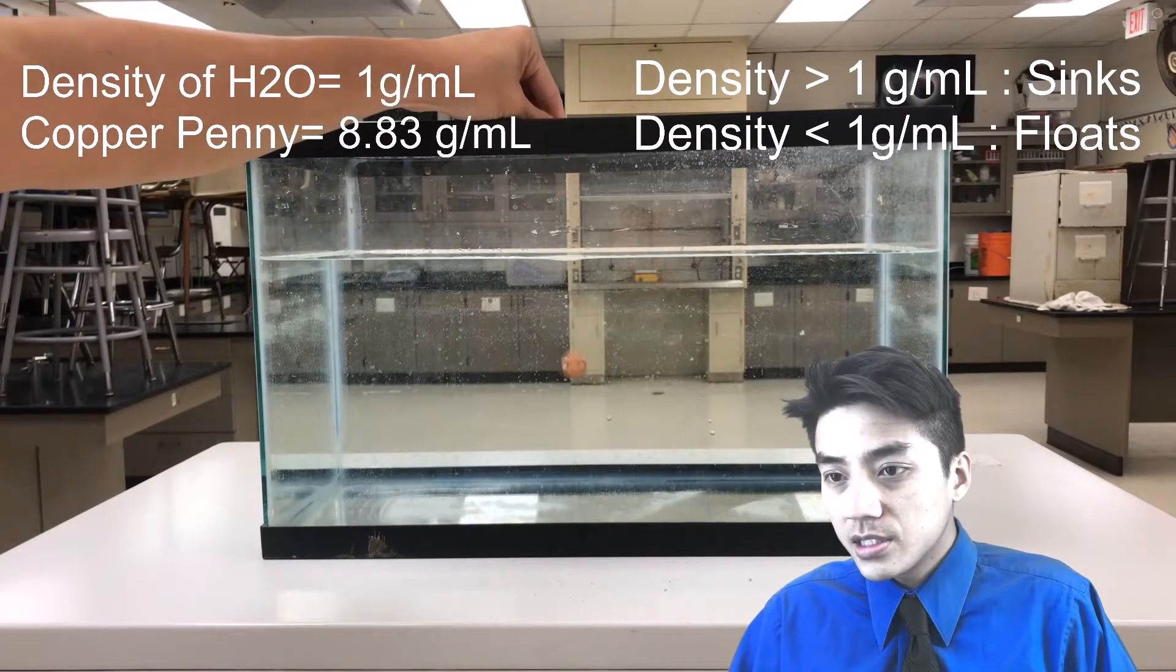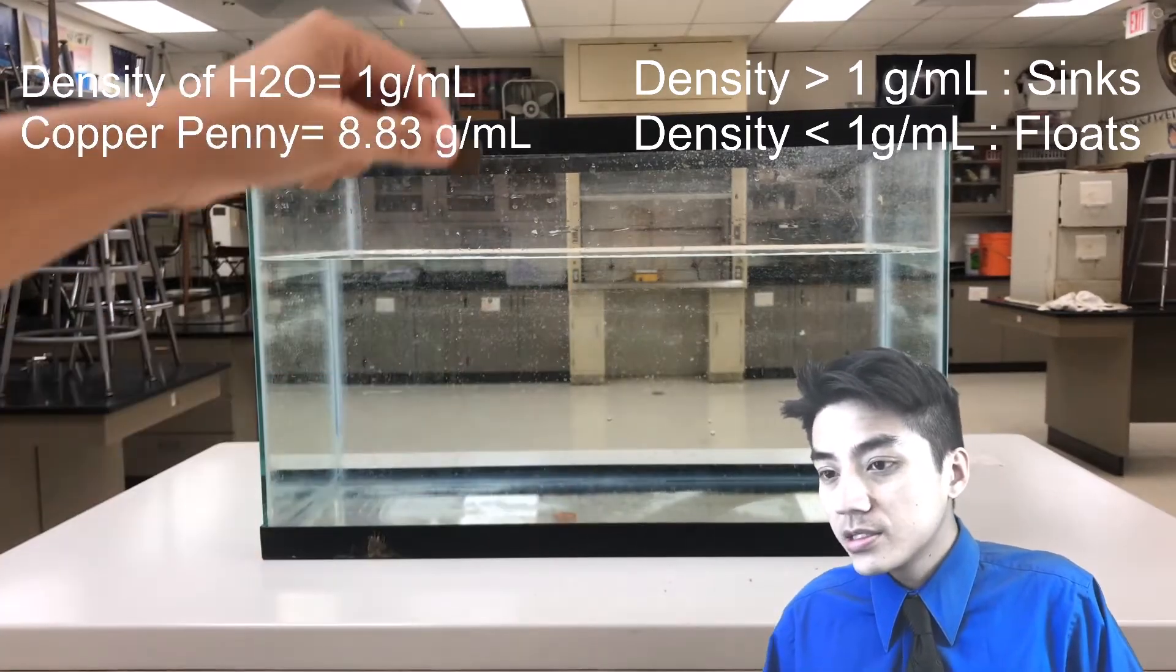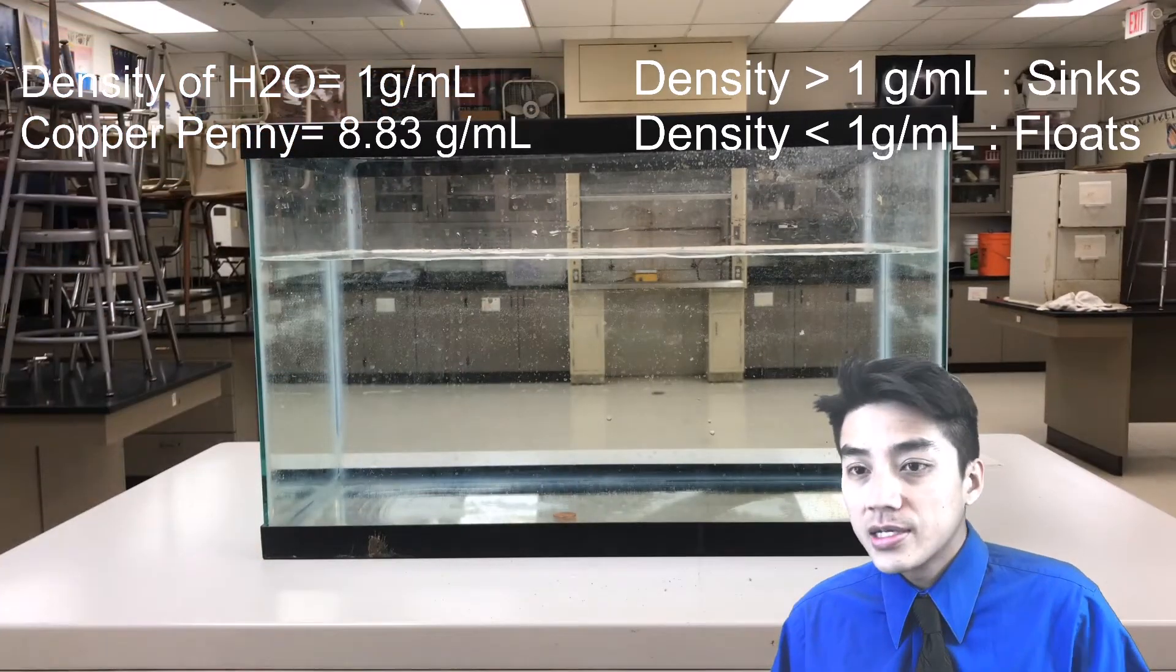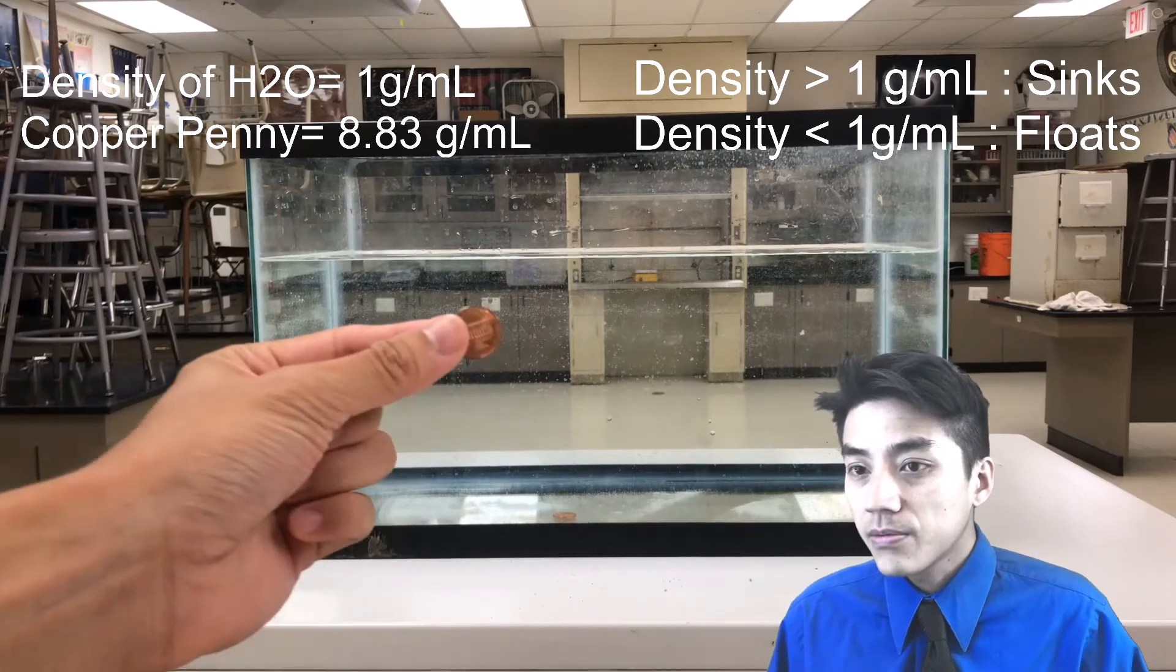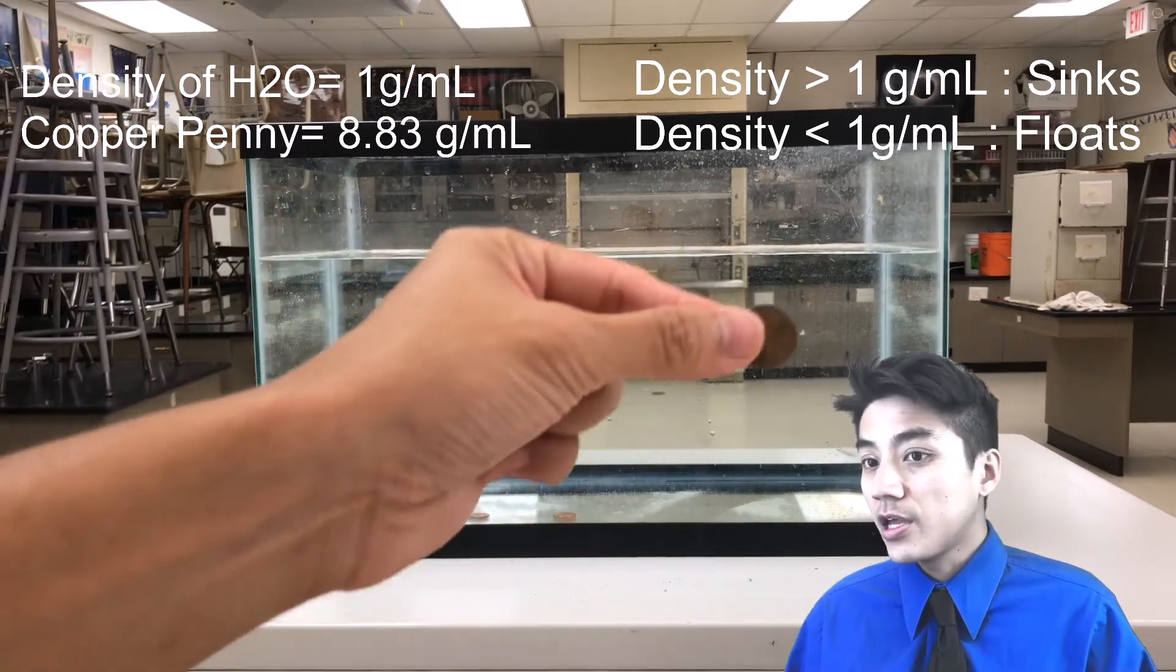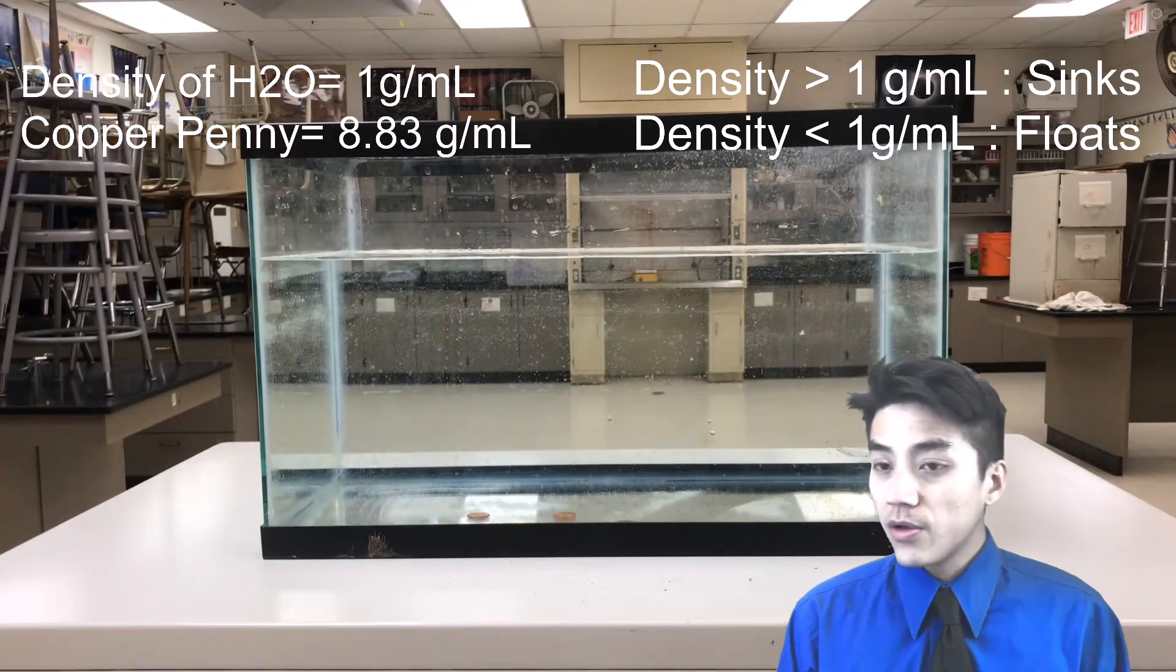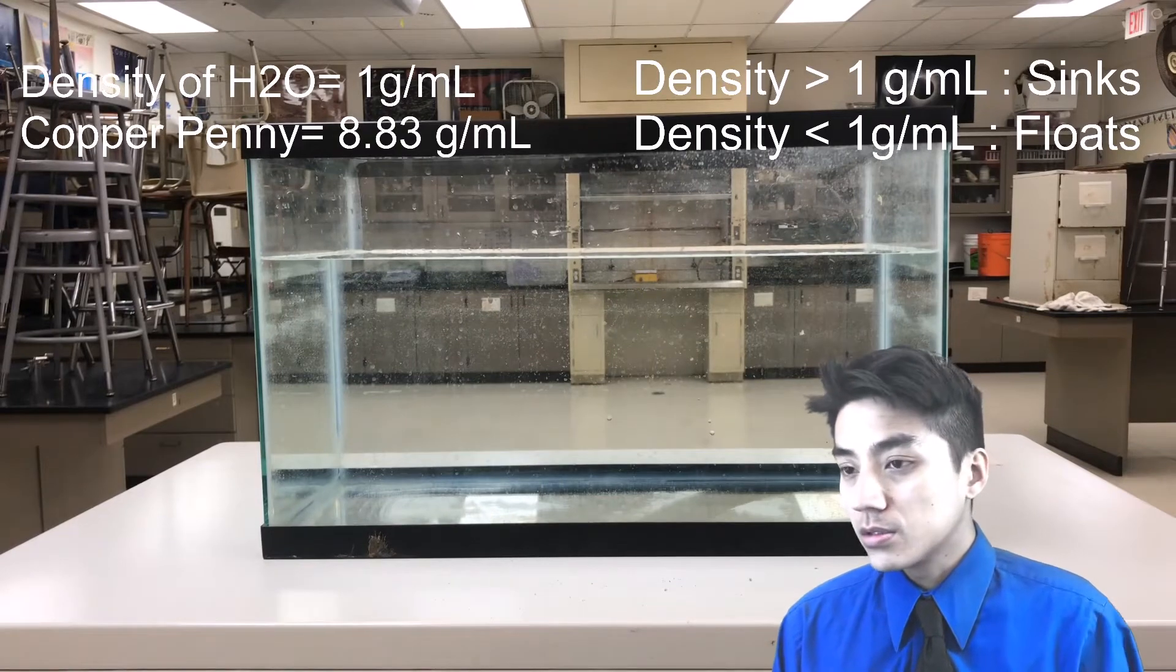It's really easy to tell what's going to sink and what's going to float. In this case, I have copper pennies going into the tank. Copper has a density of about 8.83 grams per cubic centimeter. Because the number 8.83 is greater than 1, it's going to sink. Anything less than 1, or if it's around 1, it has potential to float.